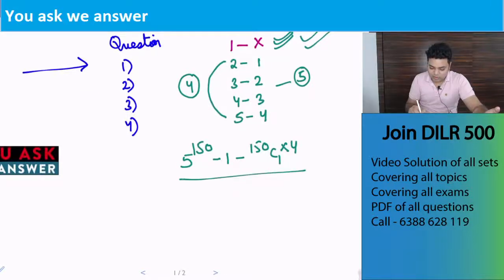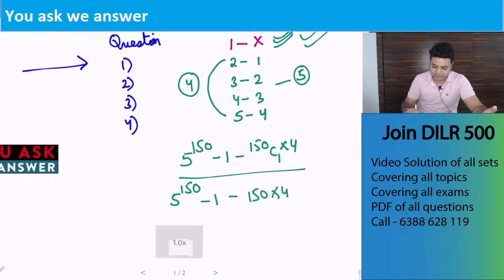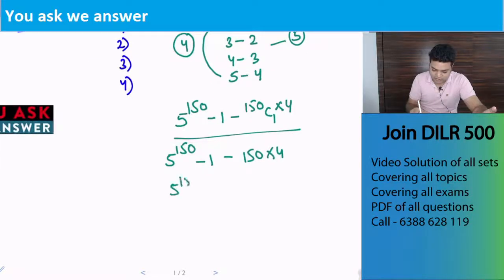Now the value we have is 5 raised to 150 minus 1 minus 150 into 4. 150 C1 is 150. That is 5 raised to 150 minus 150 into 4 which is 600 minus 1, that is 601, and that is your answer.